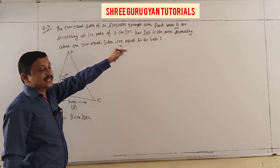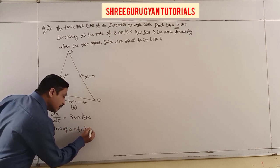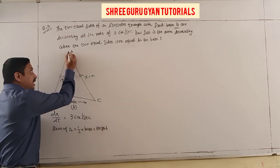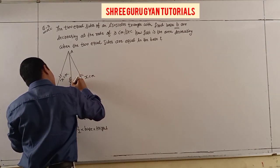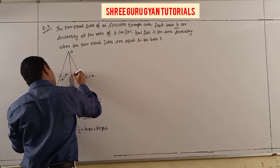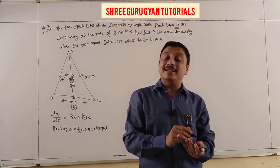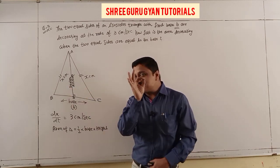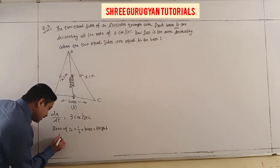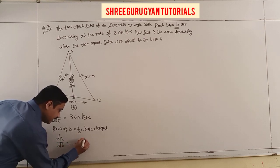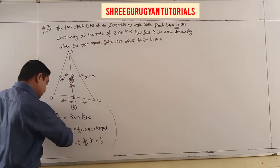The equal sides are decreasing, so dx/dt = -3 cm/s (negative because decreasing). We need dA/dt when x = b. Area of triangle = (1/2) × base × height. In an isosceles triangle the median and altitude coincide, so we use the Pythagorean theorem to find the height.